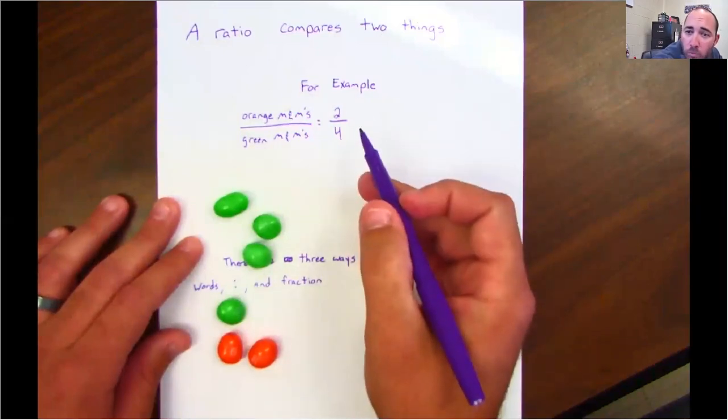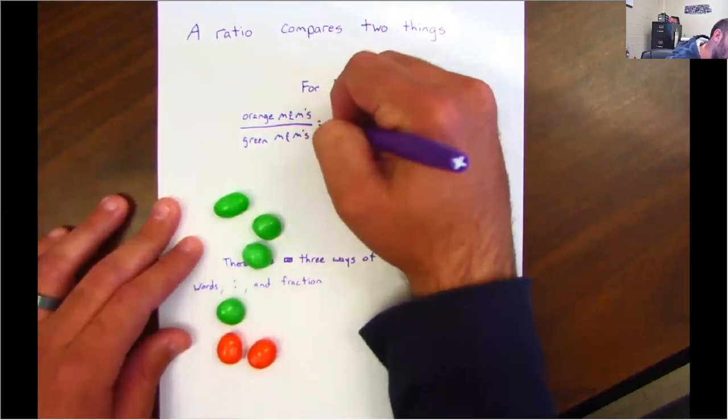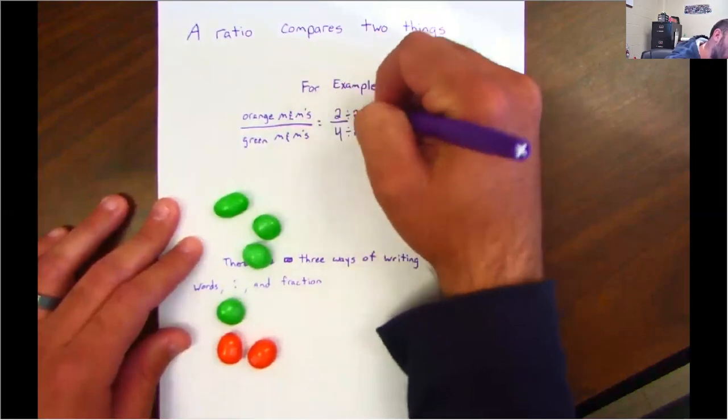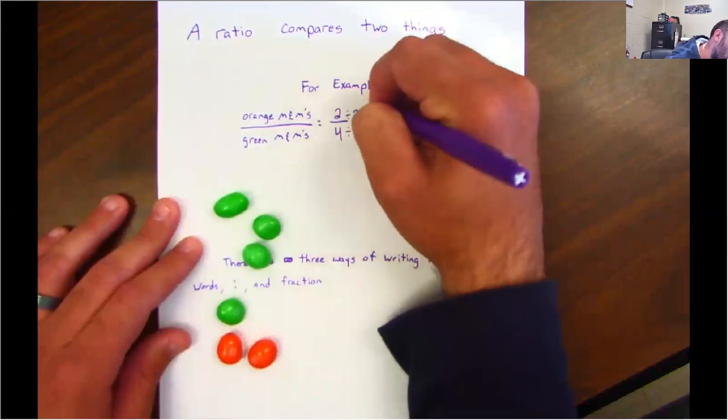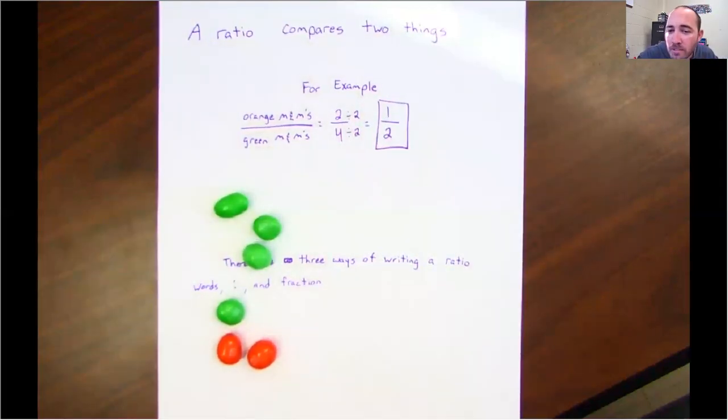Can it be simplified? Well, yes, they're both even numbers, which means they are both divisible by two. There's your ratio of orange M&Ms to green M&Ms. Not bad, right?